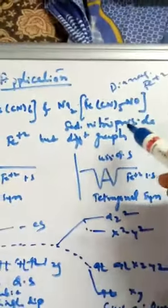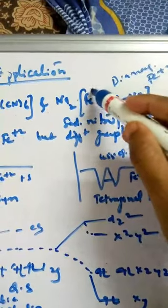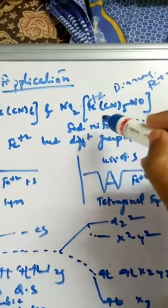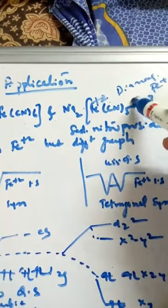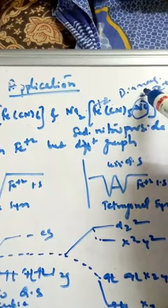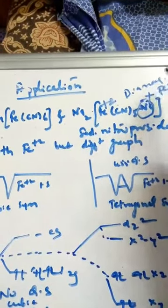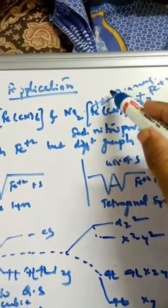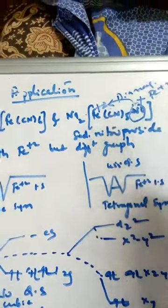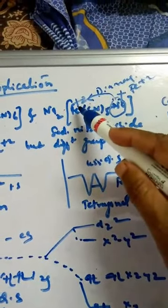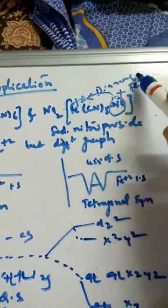Sodium nitroprusside Na2FeCN5NO is a diamagnetic compound where iron is in the +2 state. But if you see the complex, the NO is in +3. It acts as a neutral ligand, and because this is an odd electron system, one electron is transferred, making it act as a neutral species. So iron goes from +3 to +2, making it diamagnetic in nature.